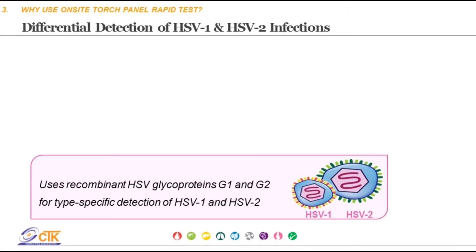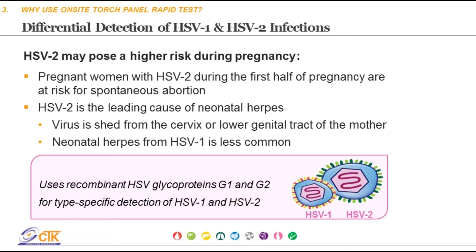CTK's On-Site Torch Panel Rapid Test allows differentiation of HSV1 and HSV2 using HSV glycoproteins G1 and G2 for type-specific detection. This is especially important during pregnancy as they have different outcomes. Knowing HSV2 status is important as it is associated with a higher risk of spontaneous abortion and is the most frequent cause of neonatal herpes. If a woman had a past HSV2 infection, the risk of fetal transmission is very low, but during an active infection the risk is much greater, especially at birth.